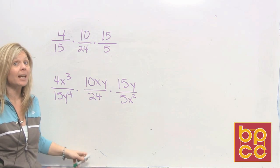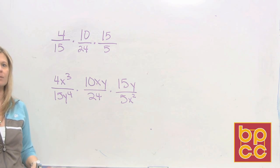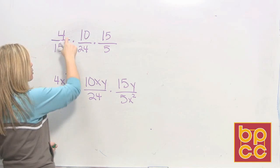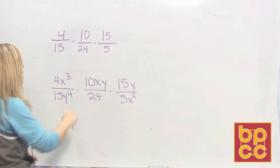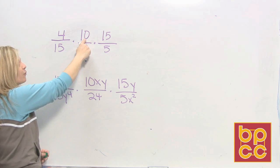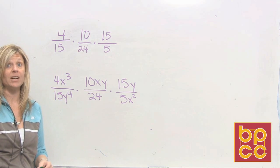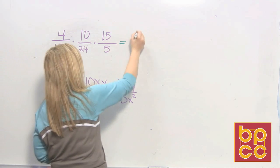How do we multiply fractions? We've been singing all semester: Multiplying fractions is no problem. Top times top, bottom times bottom. So technically we're supposed to take the numerator and multiply it and the denominator. So let's do that. 4 times 10 is 40. 40 times 15, well I know 4 times 15 is 60. So 40 times 15 would be 600.